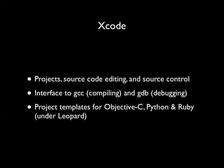Apple also considers Xcode and Interface Builder to be part of the Cocoa environment. Xcode provides project control, source control, and source code editing — it's essentially a graphical user interface to GCC for compiling and GDB for debugging. Under Leopard, it comes with project templates for Objective-C, Python, and Ruby, so we'll be using the Python templates.